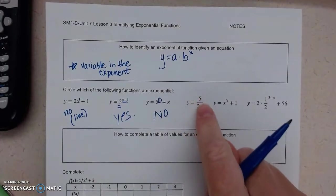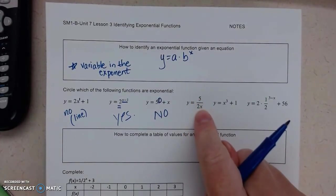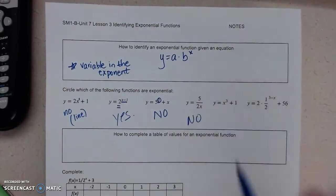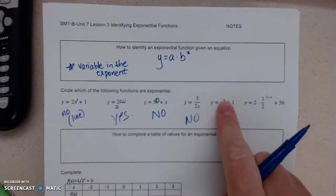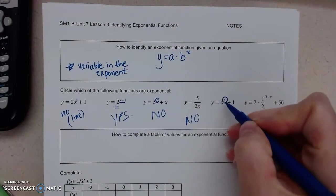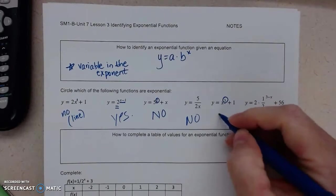Y equals x cubed plus 3. So I do have x to a cubed, but my variable is the base. My variable is not in the exponent.